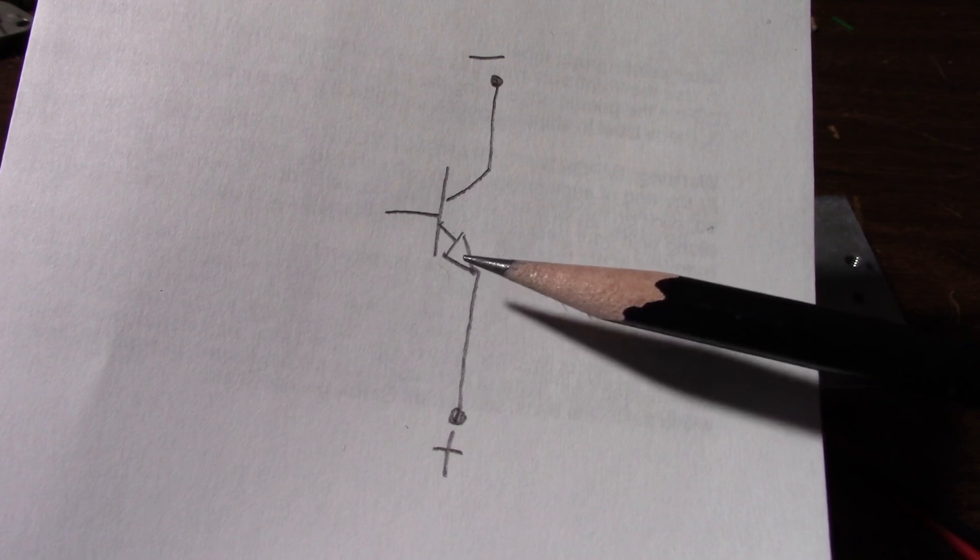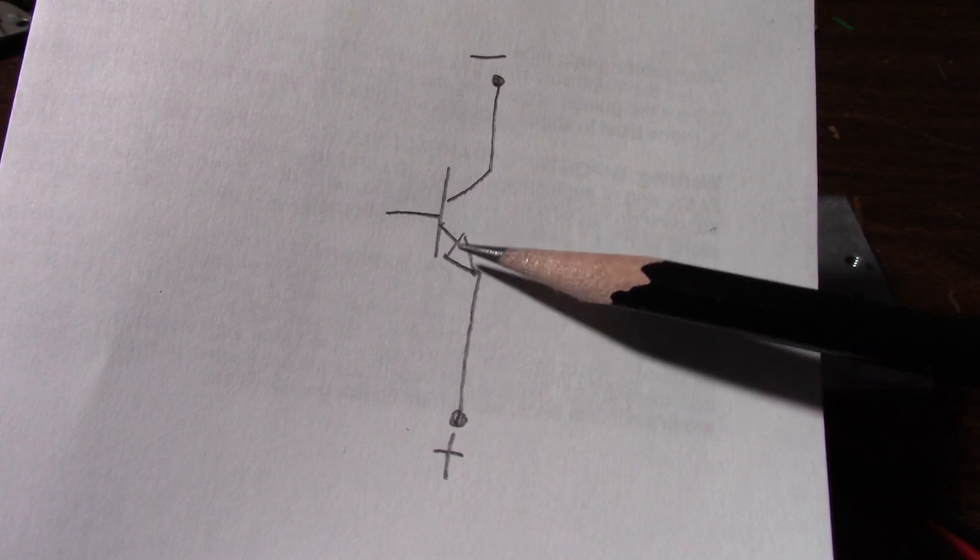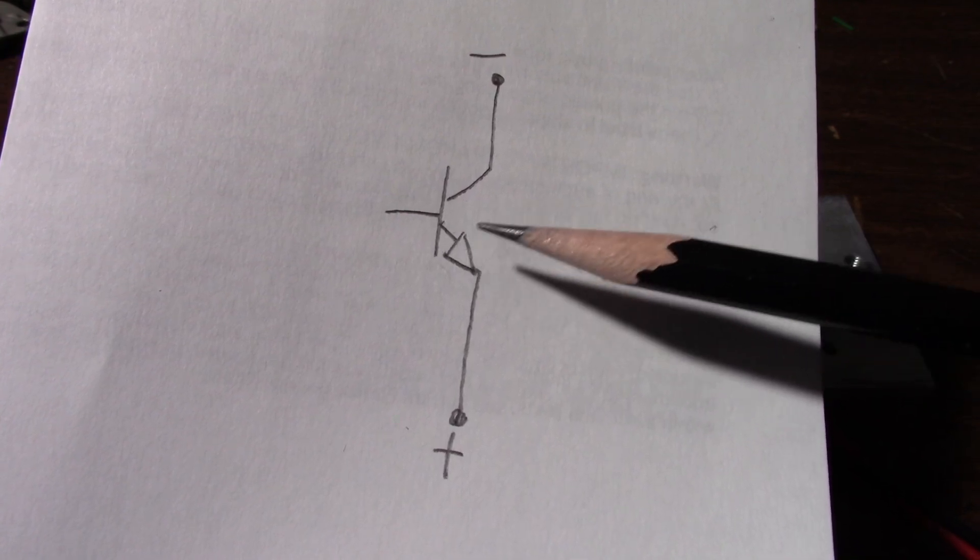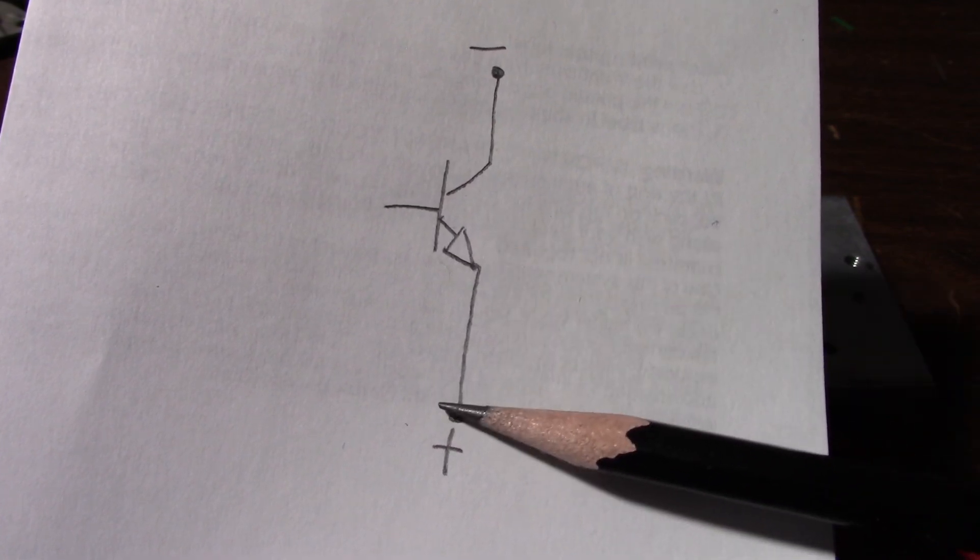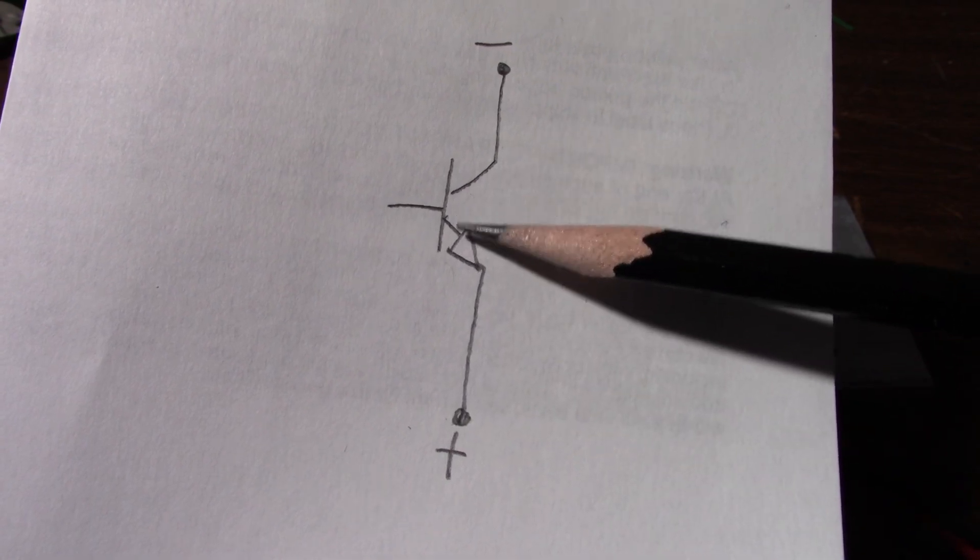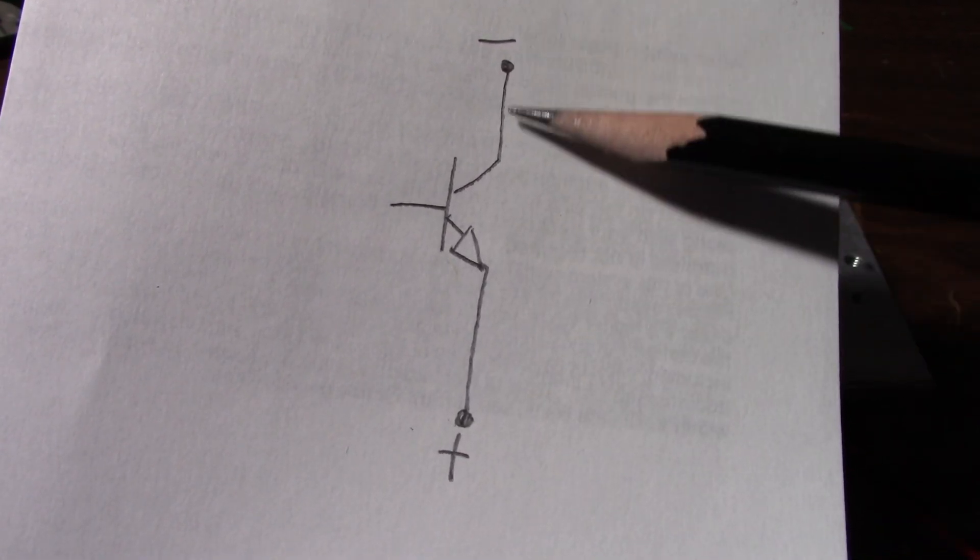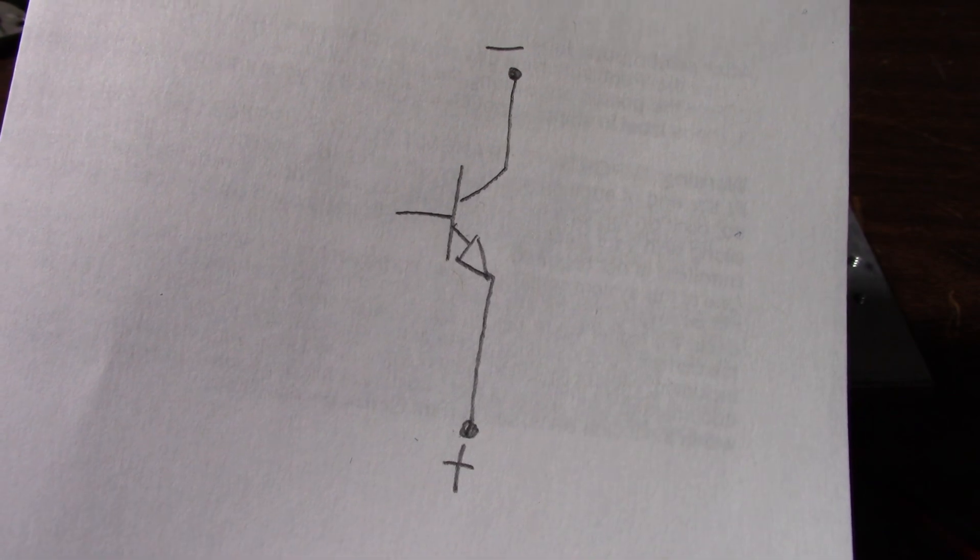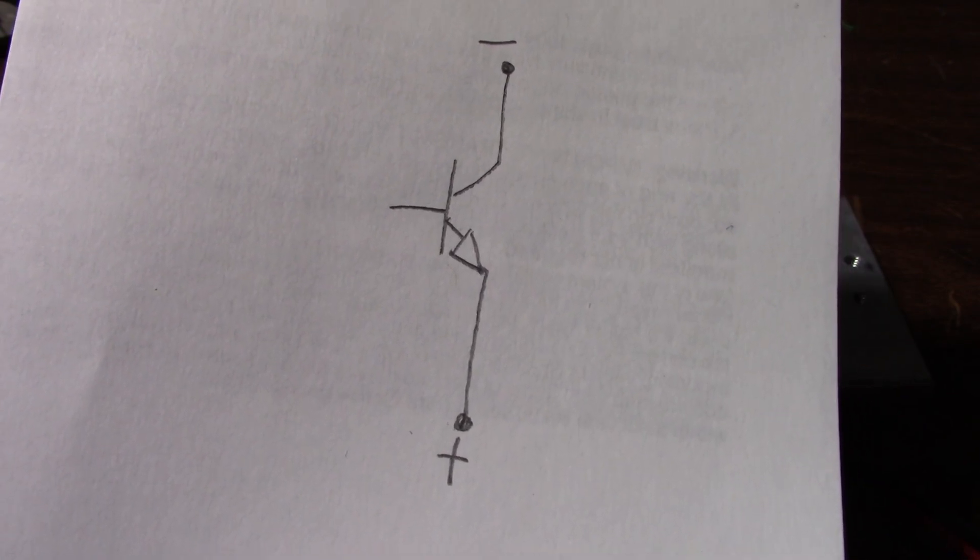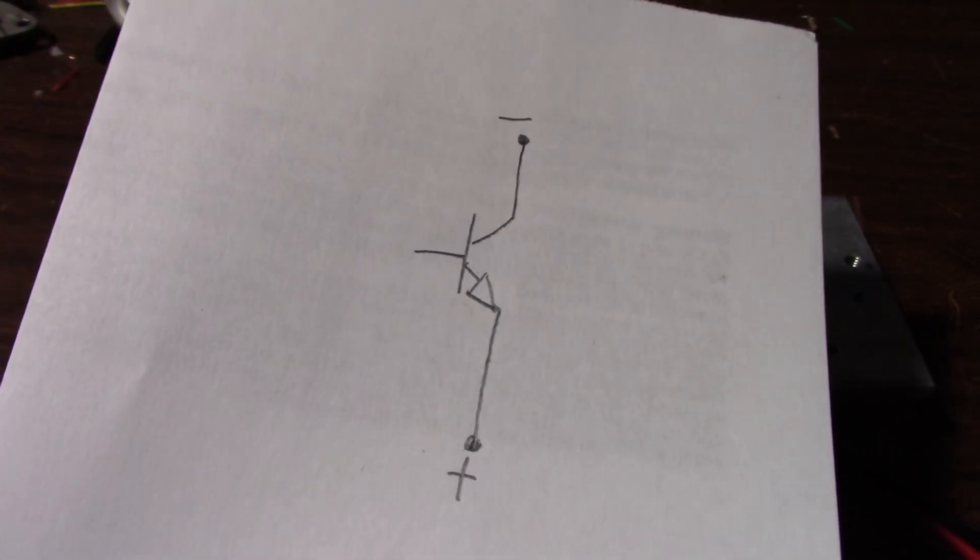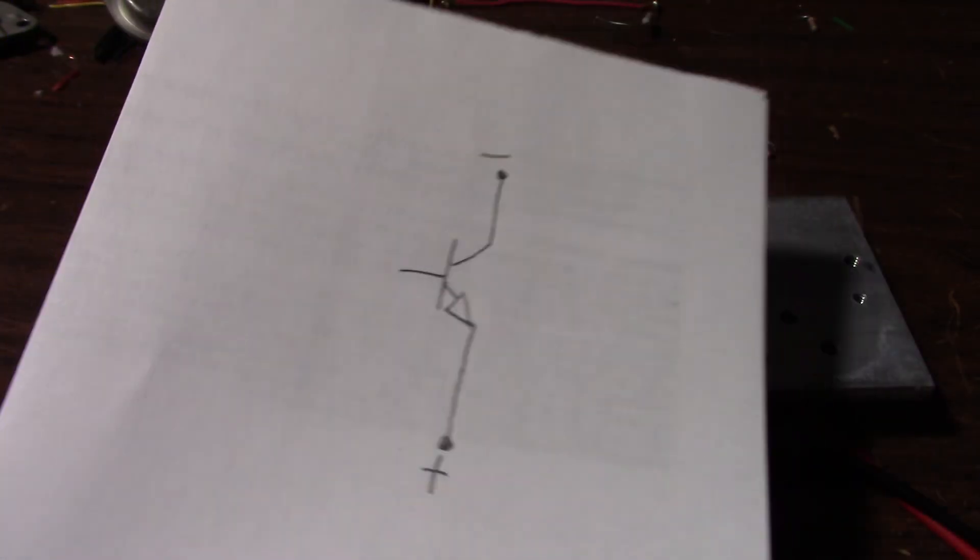And the positive, connecting it to positive helps pull it out and pull current through the transistor. But like I say a semiconductor physicist would have to tell you the exact process that's going on there.